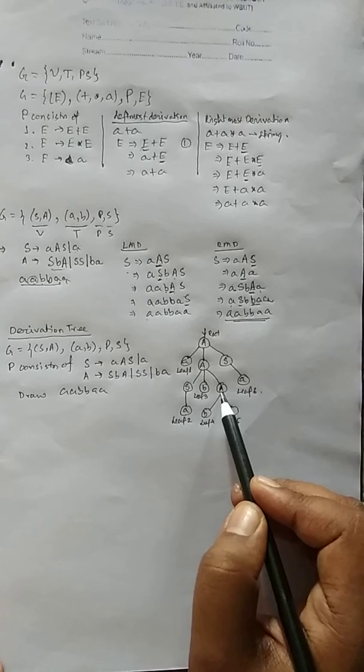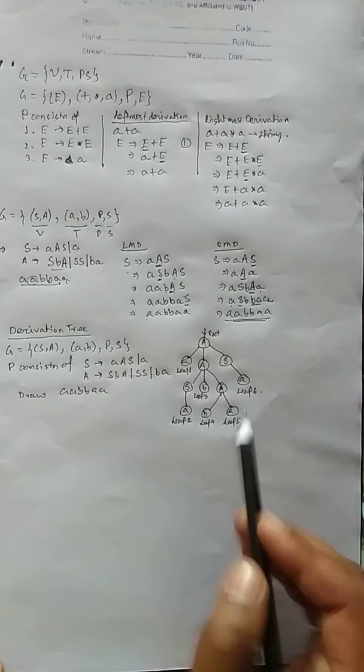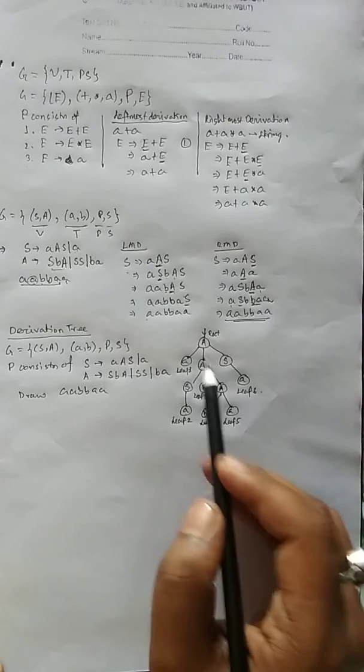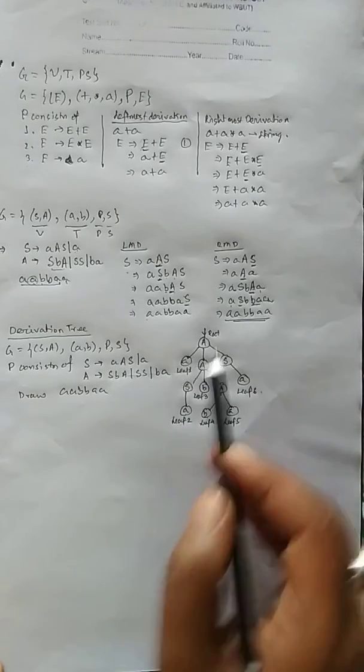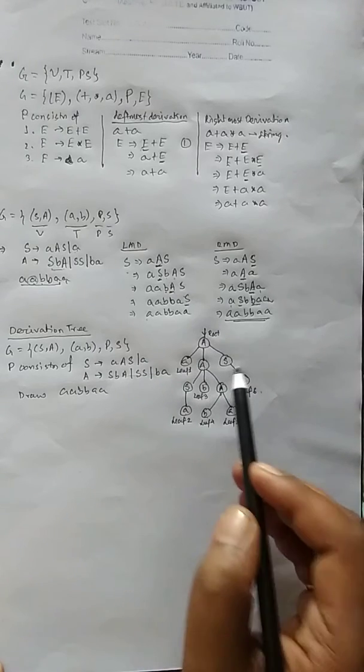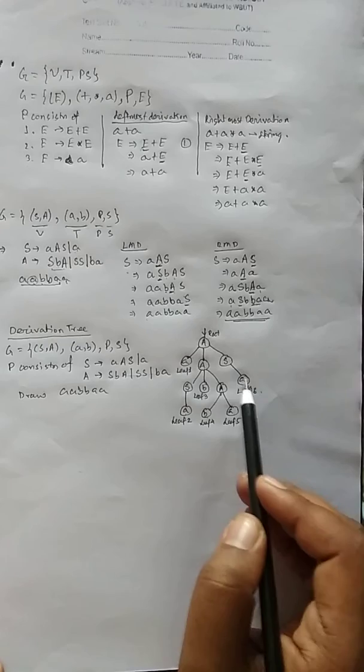For the leftmost derivation again, I am using the rule S A to b a. This means this a to b a. So this is a leaf, this is a leaf, and this thing is driven because initially it was small a capital A capital S, small a capital A capital S. Now this S is replaced by finally this a, that is